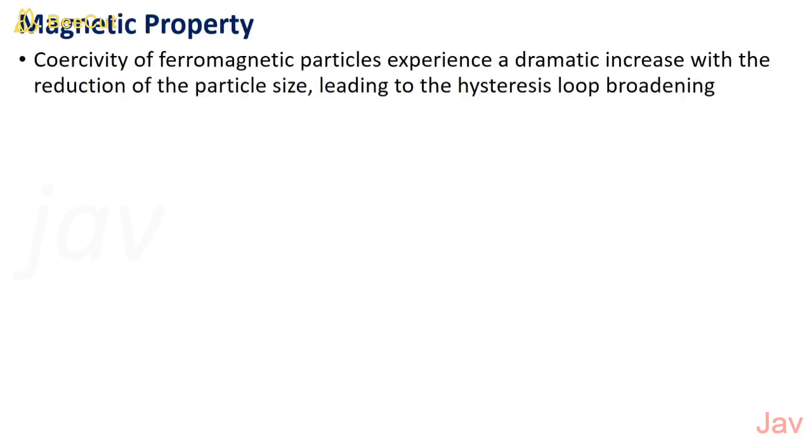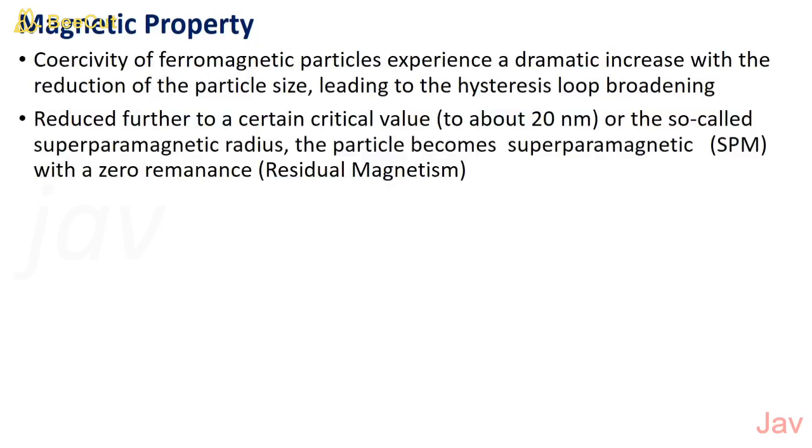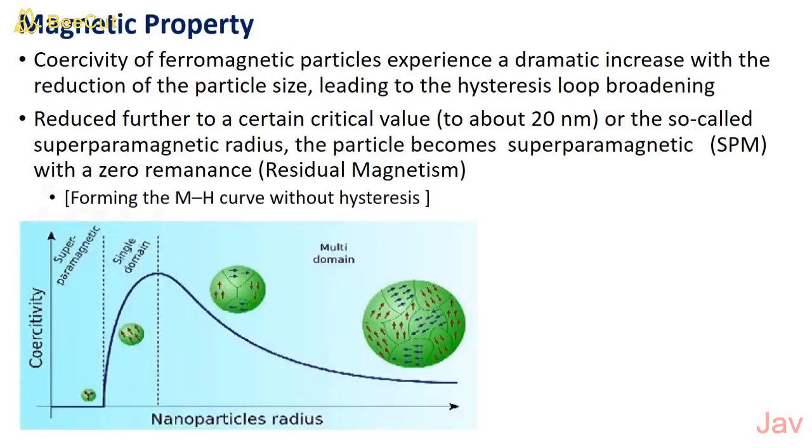Coercivity of ferromagnetic particles experience a dramatic increase with the reduction of particle size, leading to hysteresis loop broadening. Reduced further to a critical value called the superparamagnetic radius, the particle becomes superparamagnetic with zero remanence, forming a MH curve without hysteresis. As the particle size decrease, coercivity increases and then decreases and on attaining superparamagnetic radius, the coercivity becomes zero.